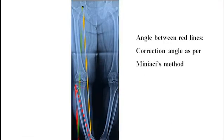For estimation of the correction angle of osteotomy, a line is drawn from the hinge point to the preoperative ankle center, and another line from the hinge point to the postoperative ankle center. The angle between these two lines is the correction angle of osteotomy.